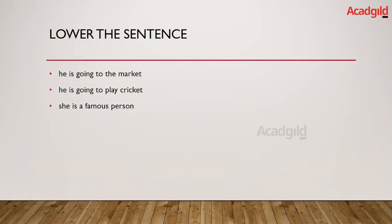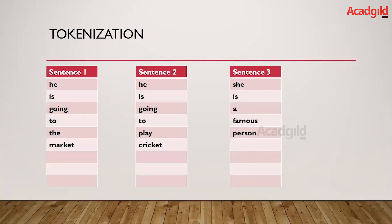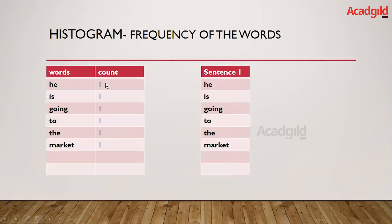Now that we have lowercased the words, the next step is tokenization. Tokenization is converting the whole paragraph consisting of three sentences into three individual sentences — sentence one, sentence two, and sentence three. After tokenization, the next step is to create a histogram, which is nothing but the frequency of the words across the sentences.